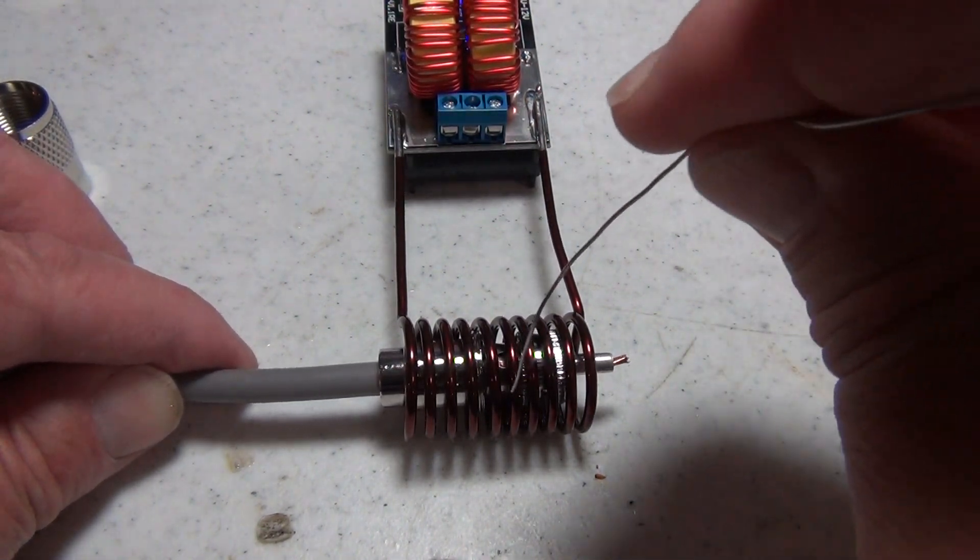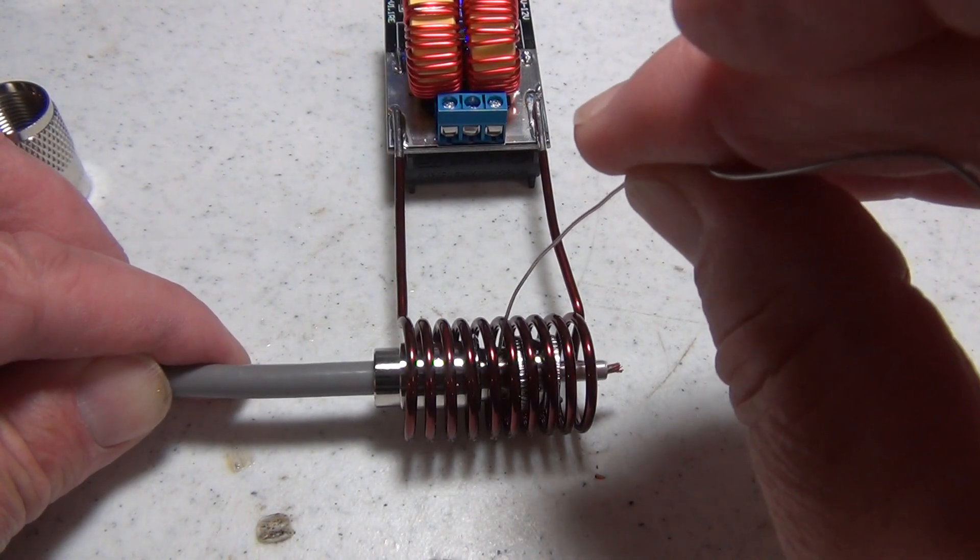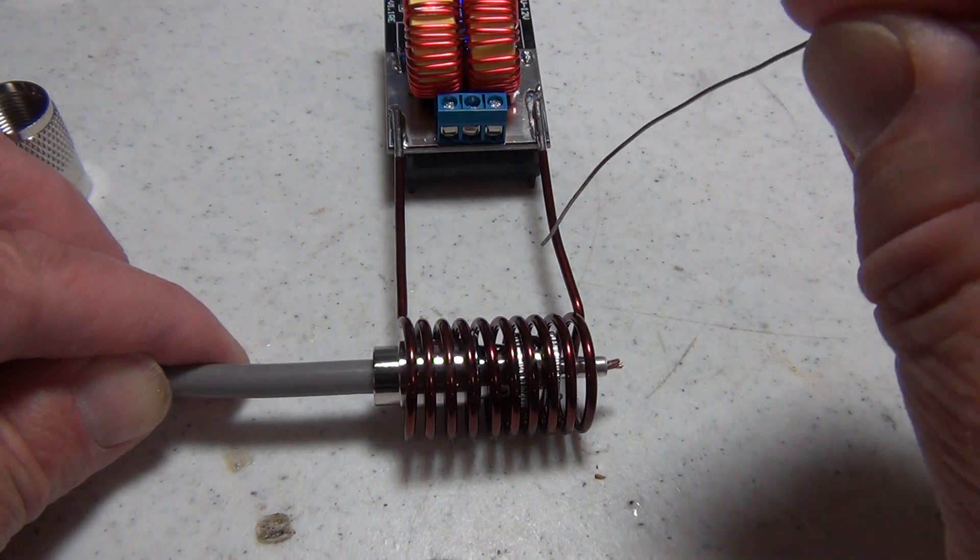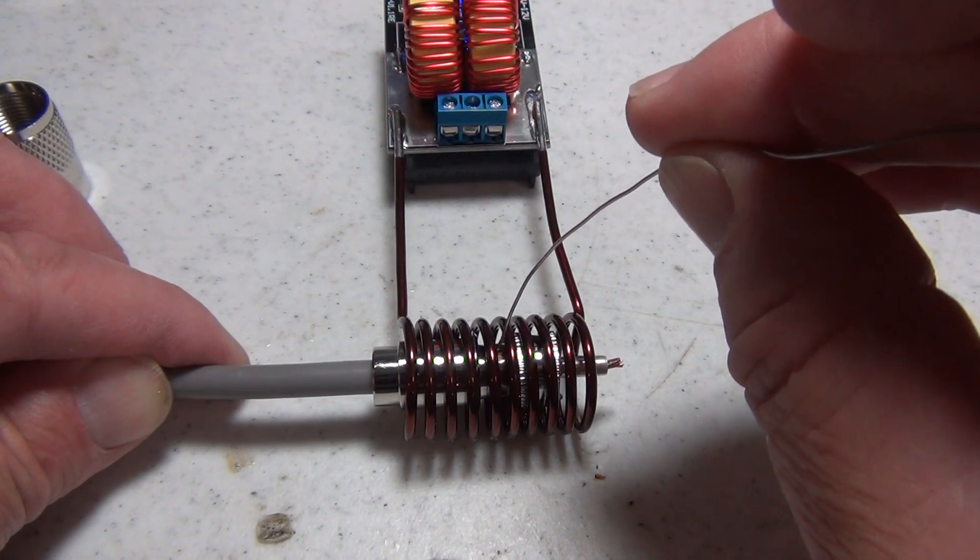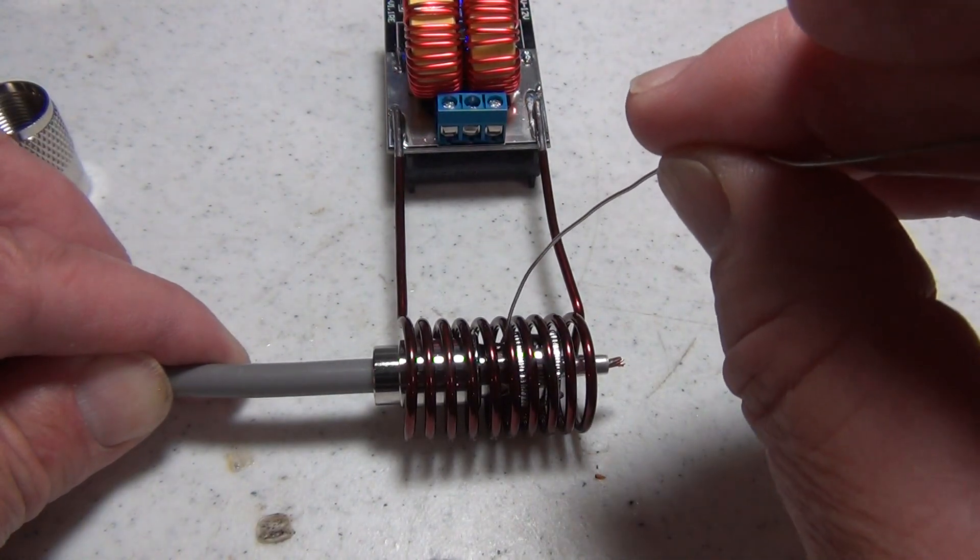You can see a little bit of smoke coming off—that is the flux activating. I use a 12 volt gel cell to get a nice hard on voltage when I flip the switch. Now I'm just testing it here.